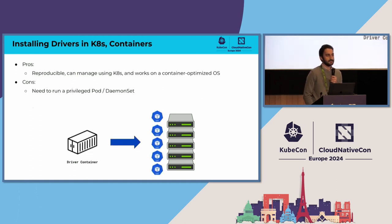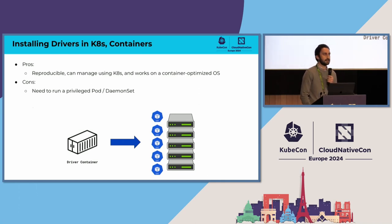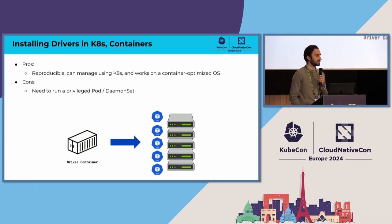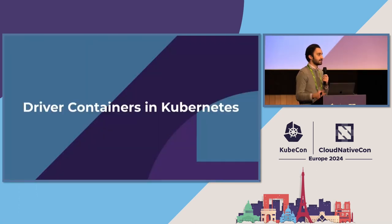The third approach is to use containers. You can package your driver and a set of install scripts into a container image and deploy it everywhere — load your kernel modules and make your user space driver libraries available on the host. This allows reproducible builds on your cluster, and you can manage it via Kubernetes. This also works on container-optimized operating systems like CoreOS or Flatcar Linux, where the root file system is mostly read-only. One con is you do need to run a pod with elevated privileges since we are loading a kernel module — running as root — something to be cognizant of when using driver containers.